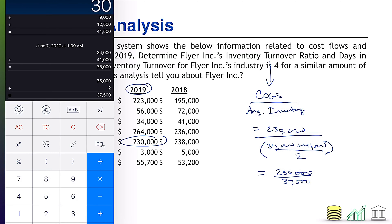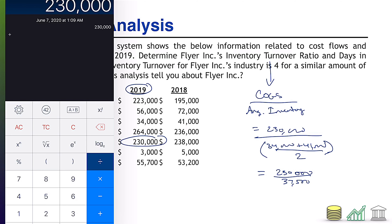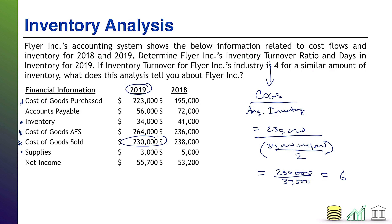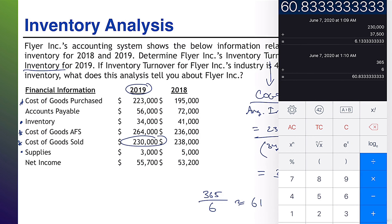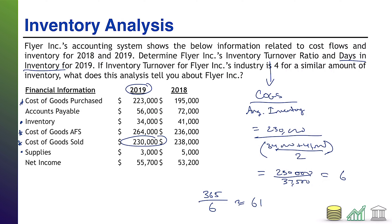$230,000 divided by $37,500 gives an inventory turnover of approximately 6. That's the inventory turnover ratio. For days in inventory, it's simply 365 divided by the turnover ratio. So 365 divided by 6 comes out to approximately 61 days.